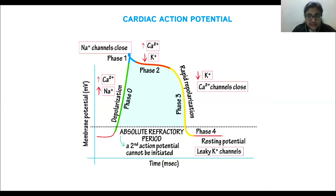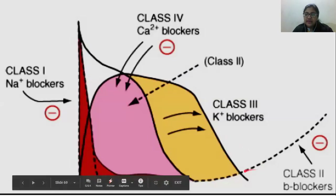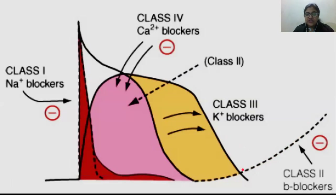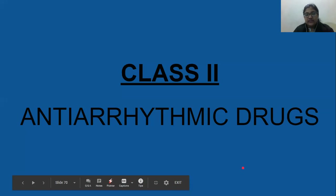This is phase four. If you look at the graph where I tried to compile all of the drug actions together, you can see the Class 2 effect — it is affecting phase four. Now let's talk about how it affects phase four.